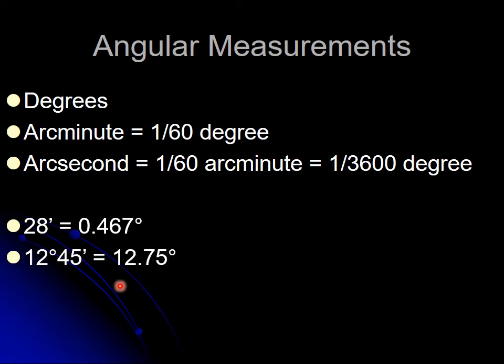For 12 degrees, 45 arc minutes: 45 divided by 60 is 0.75, so 12 degrees plus 45/60ths is 12.75 degrees.